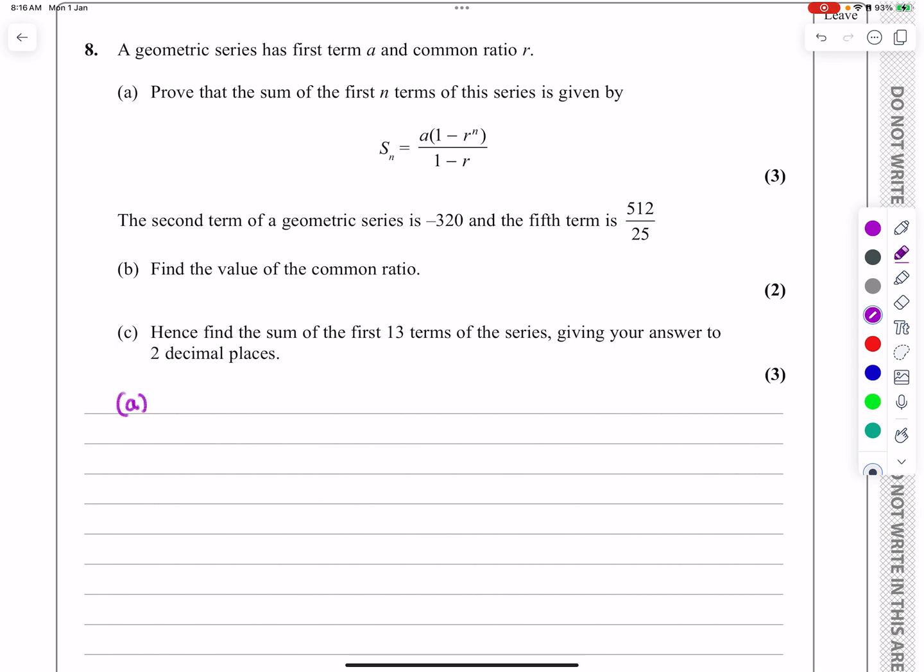Geometric series is where we start with a, the next term would be ar, the next term would be ar squared, ar cubed, and so on, up to the nth term. The nth term, hopefully you already know, is ar to the n minus 1. The power of r is always one less than the actual number of the term.